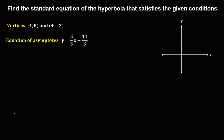First, we need to graph this hyperbola using the given information. From the coordinates of the vertices, x is positive 4 and y is positive 8. So we plot the first vertex at (4, 8).